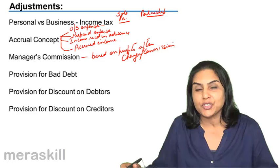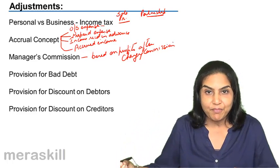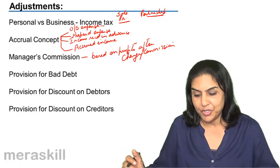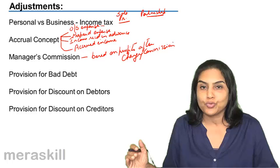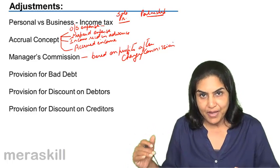We have to deduct the manager's commission and the amount of manager's commission would be exactly 10% of the profits after deducting such commission. We will go through those adjustments and some problems relating to the same later.